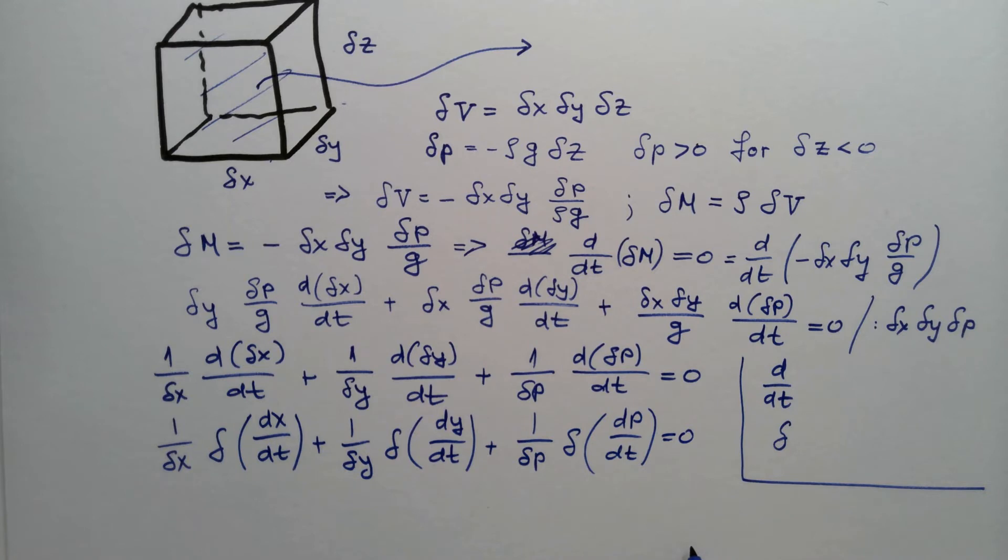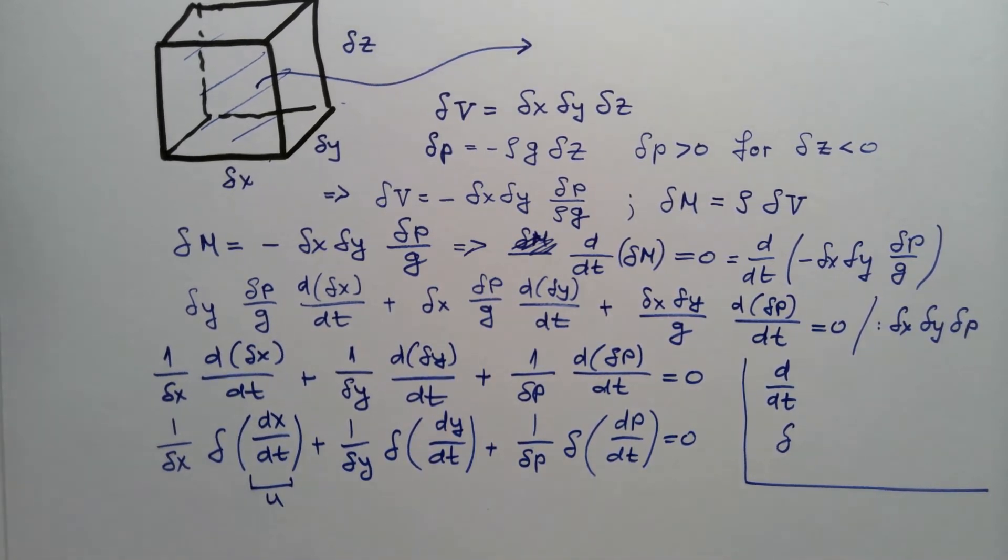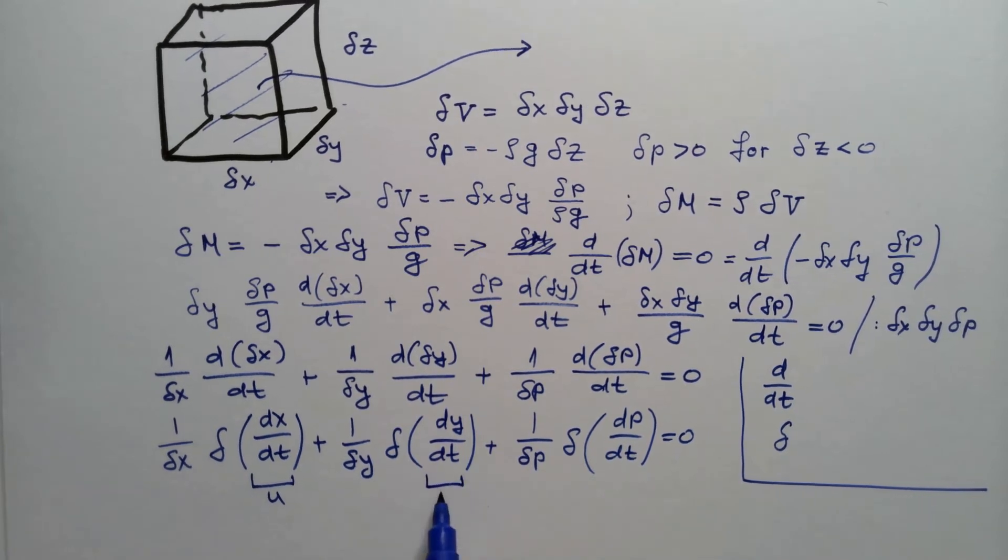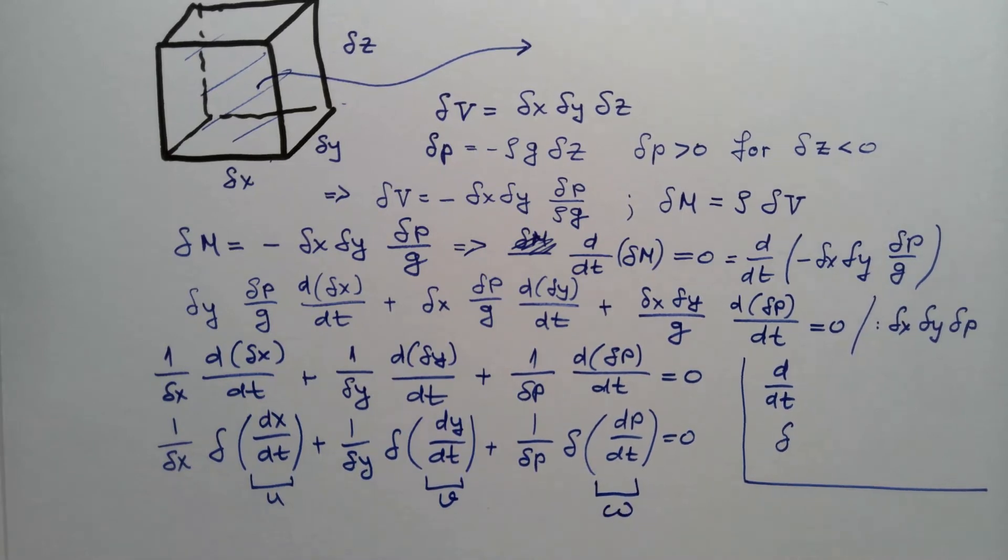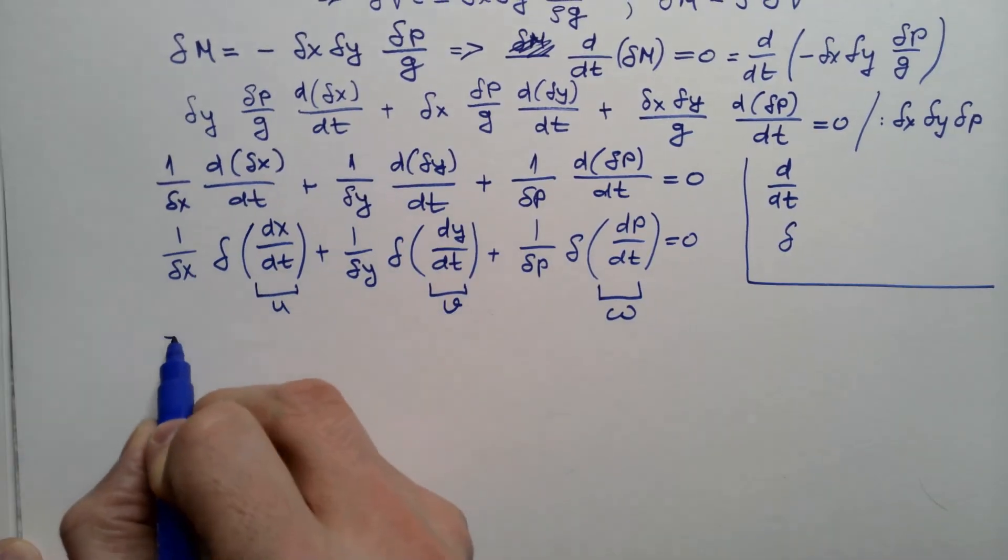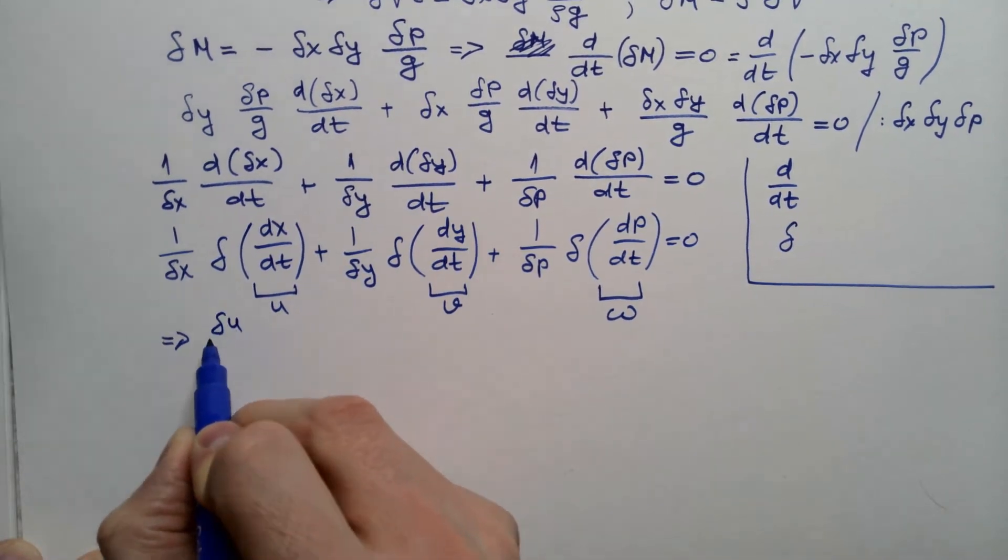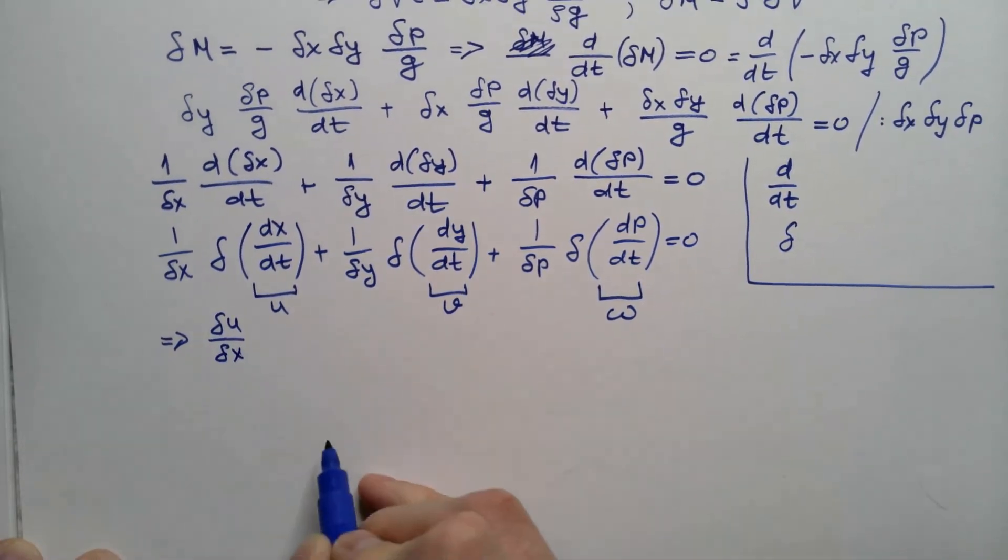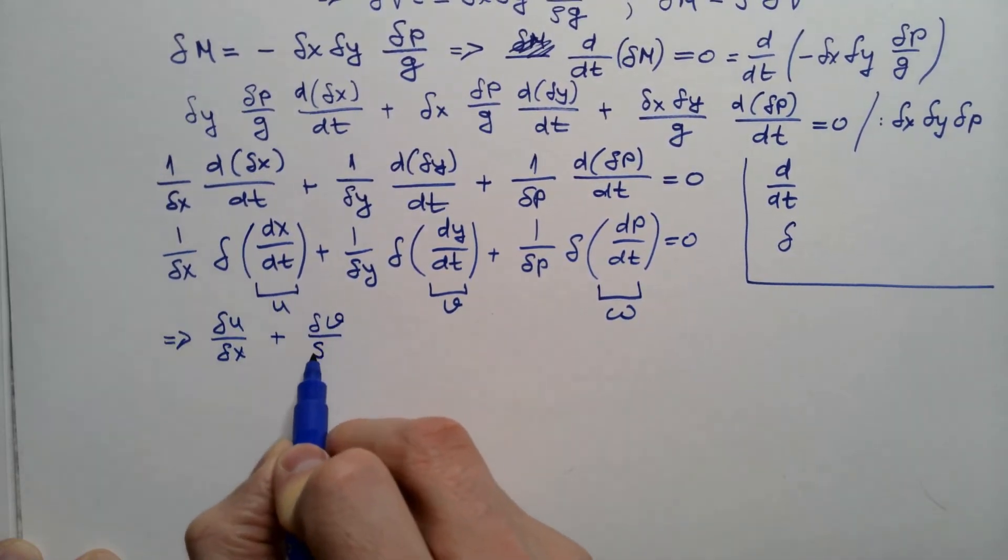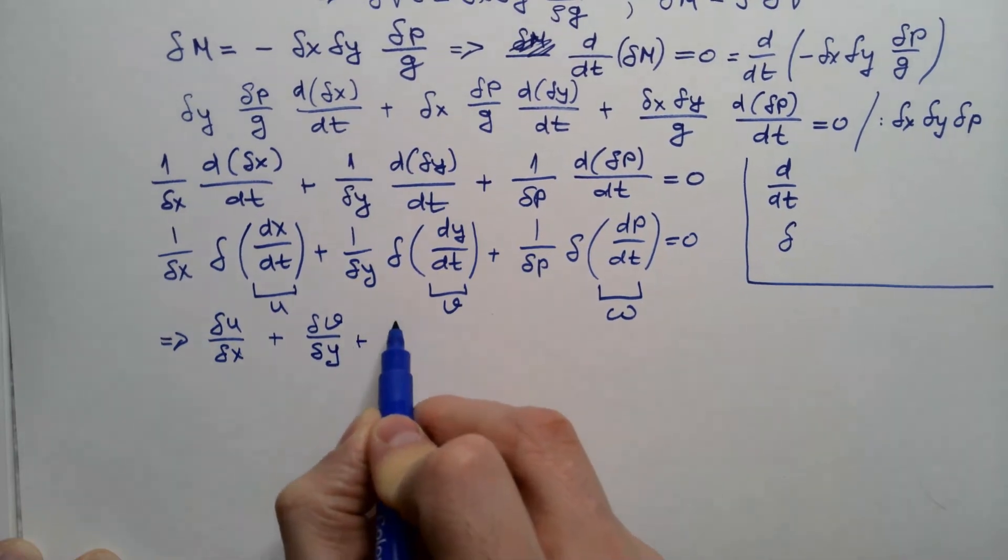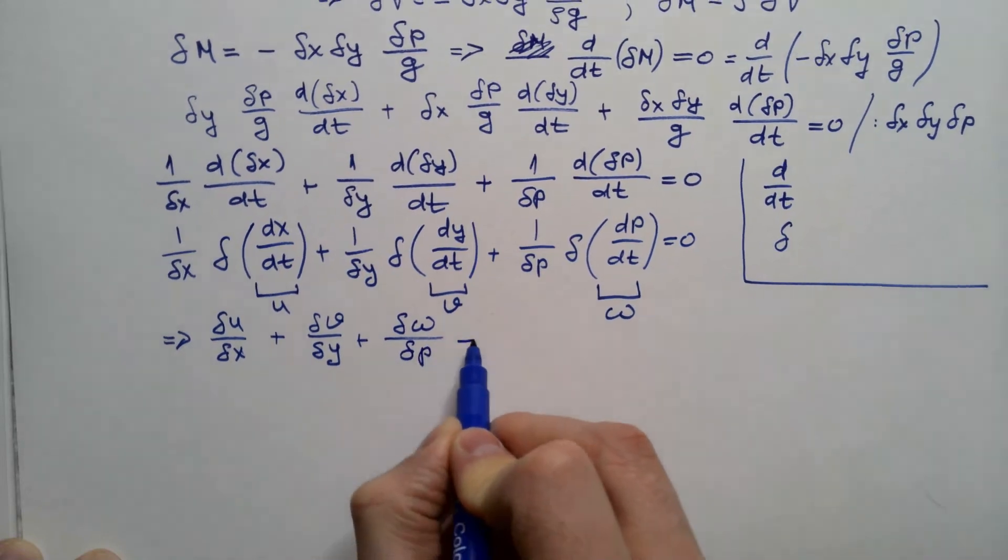But now notice that this is u component of wind, this is v component of wind, and this is omega vertical motion. Which means that this equation becomes delta u delta x plus delta v delta y plus delta omega delta p equals zero.